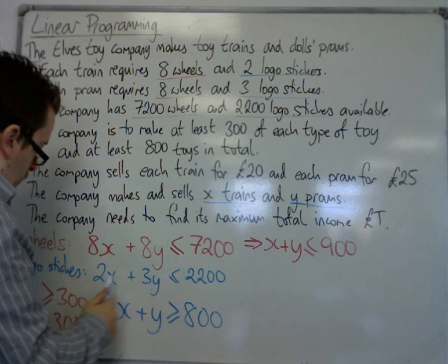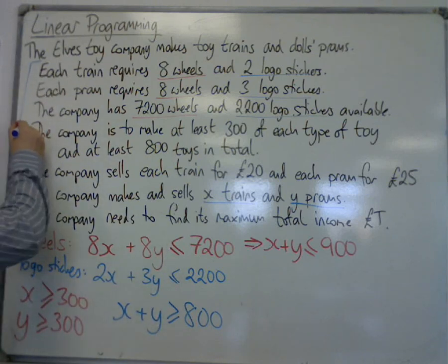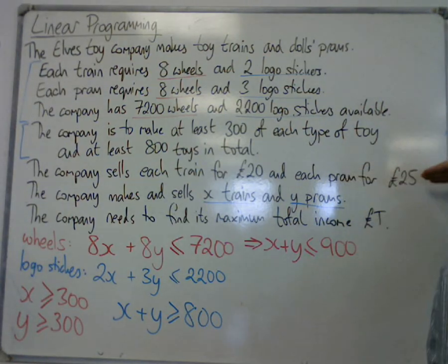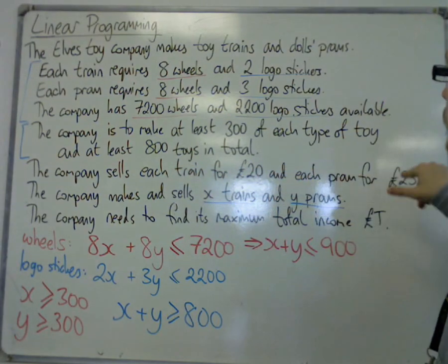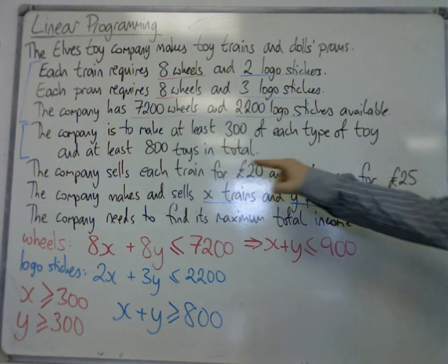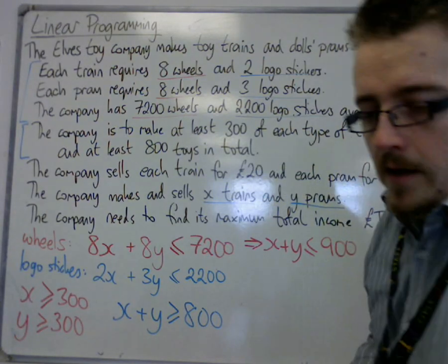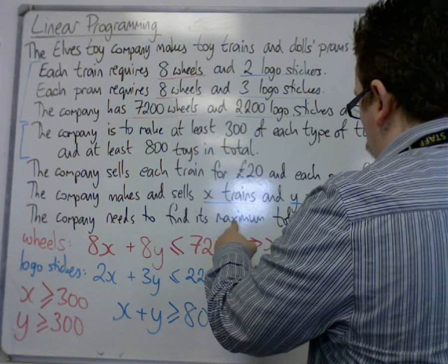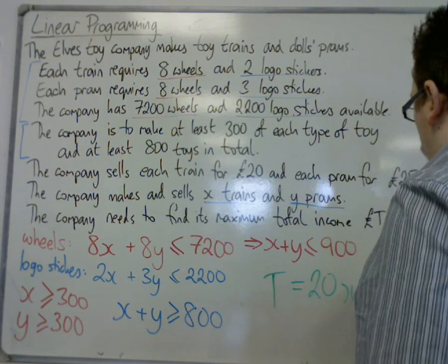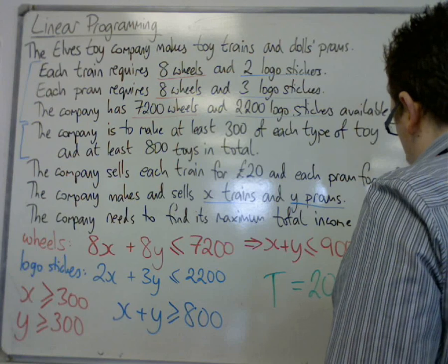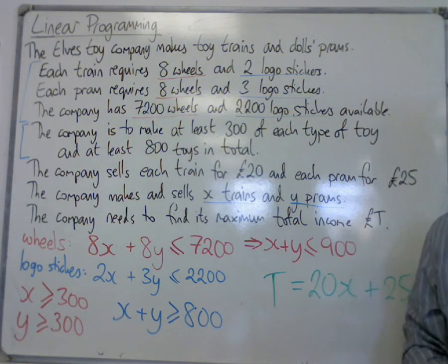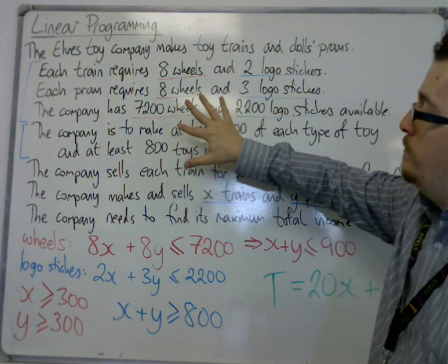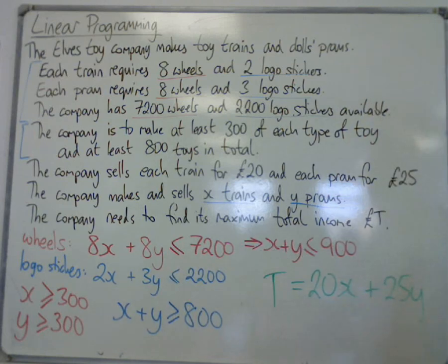And there are your five inequalities that build up this problem. Now we also need an objective function, coming from this sentence: the company sells each train for £20 and each pram for £25 — so this describes the company's income. The income T is equal to 20x plus 25y. This is your objective function for this problem, and it has now been taken from a worded problem to a linear programming problem which can now be solved graphically.